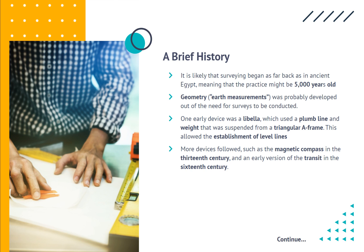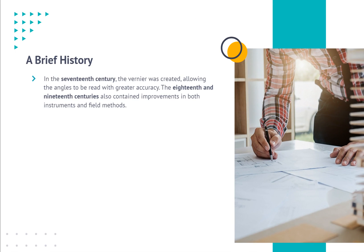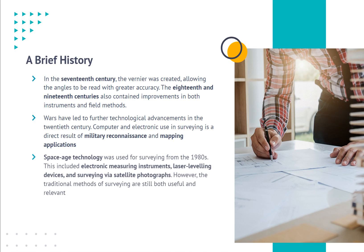More devices followed, such as the magnetic compass in the 13th century and an early version of the transit in the 16th century. In the 17th century, the vernier was created, allowing angles to be read with greater accuracy. The 18th and 19th centuries also contained improvements in both instruments and field methods. Wars led to further technological advancements in the 20th century, and computer and electronic use in surveying is a direct result of military reconnaissance and mapping applications. Space age technology was used for surveying from the 1980s, including electronic measuring instruments, laser leveling devices, and surveying via satellite photographs. However, the traditional methods of surveying are still both useful and relevant.